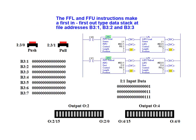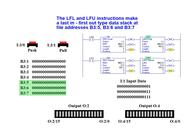The FFL and FFU instructions make a first-in-first-out type data stack at file addresses B31, B32, and B33. The LFL and LFU instructions make a last-in-first-out type data stack at file addresses B35, B36, and B37.